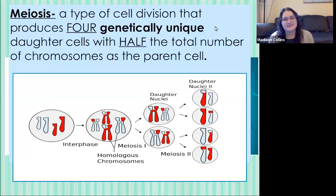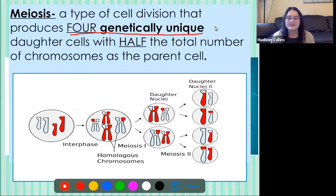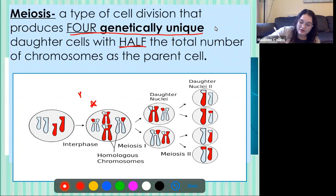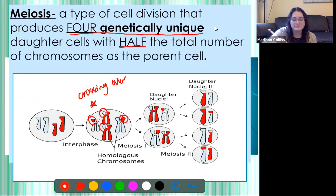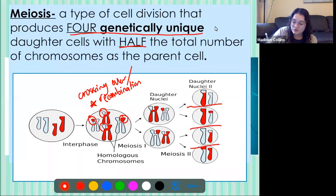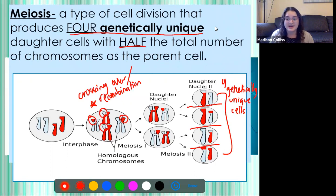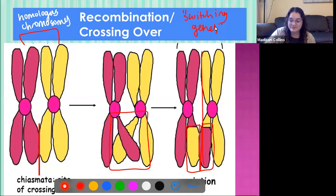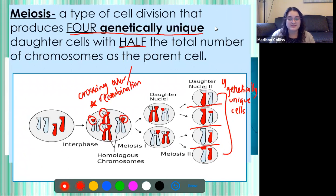So the full definition of meiosis: meiosis is a type of cell division that produces four genetically unique, or genetically diverse, daughter cells with half the total number of chromosomes as the parent cell. You can see here that these chromosomes have different arms — they've already switched with each other. As you follow these chromosomes throughout the split, at the very end we're left with four genetically unique cells, all with different sets of genes. This is what leads to genetic diversity across species.